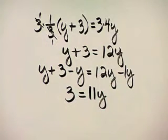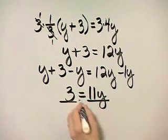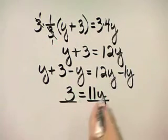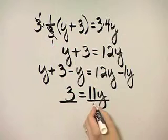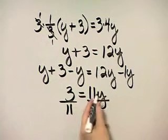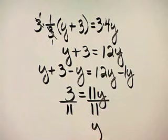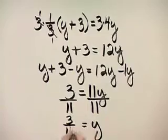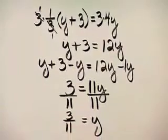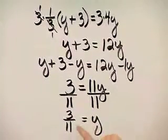How do I finish solving? I divide both sides by the coefficient of Y, which is the number beside Y, and that is 11. Because that's 11 over 11, which is 1. 1 times Y is Y. So, I have 3 elevenths equals Y. My solution is 3 elevenths.